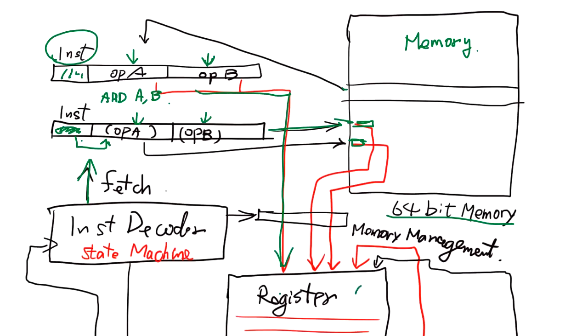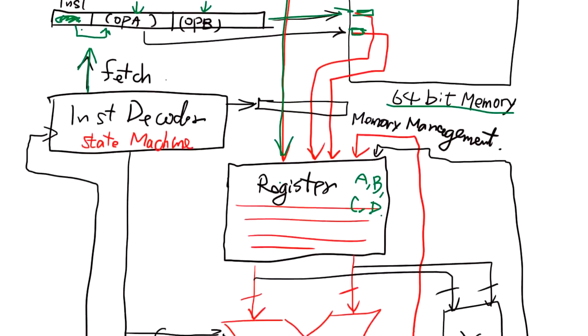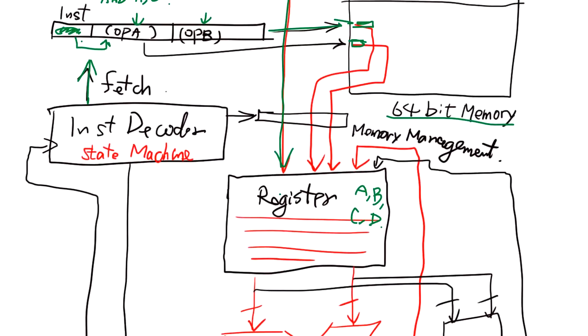So this register has A, B, C, D. Some CPU has more, and parallel computers, parallel CPUs tend to have more.